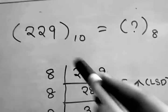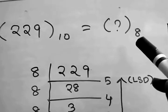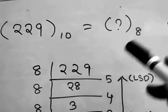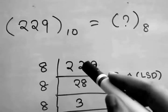So this decimal number, we'll write 229, then repeatedly we will divide by the base of the octal number system, 8, because we are going to convert this number to octal system.